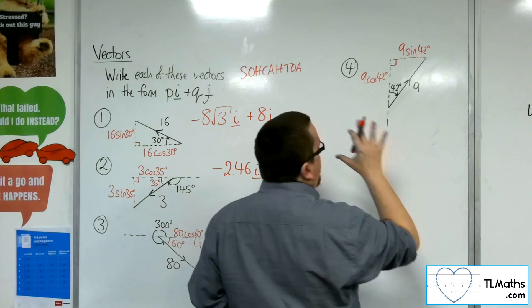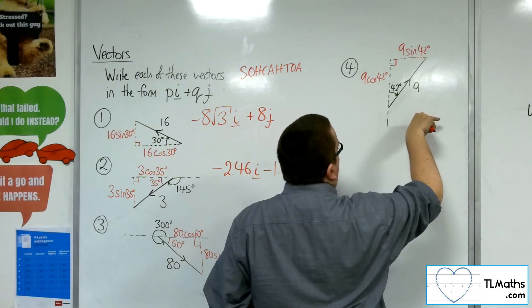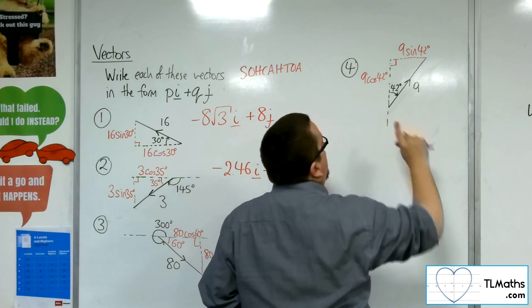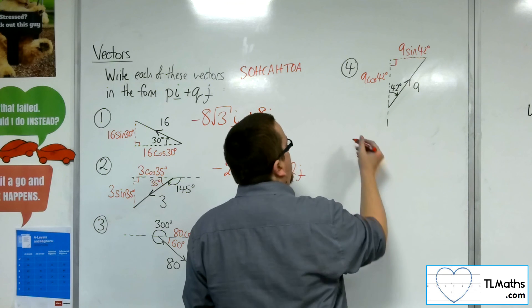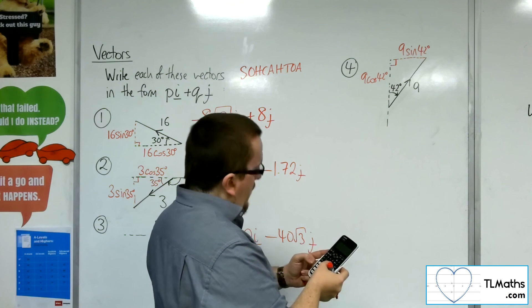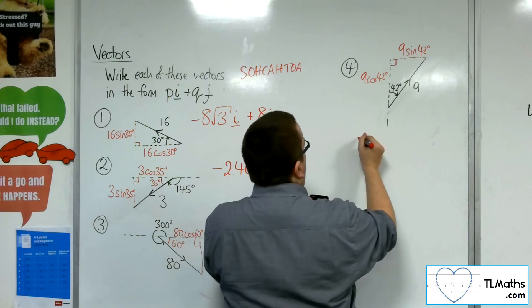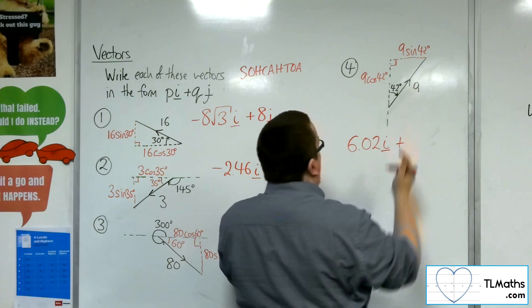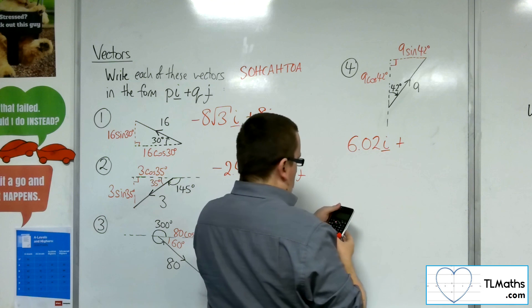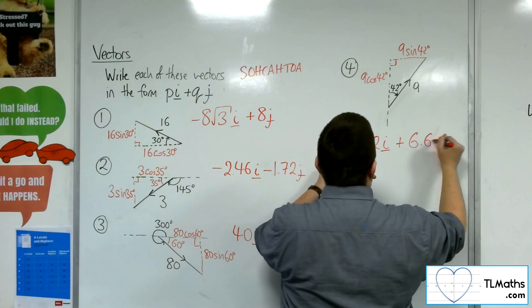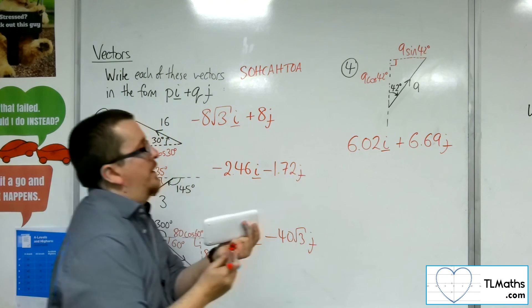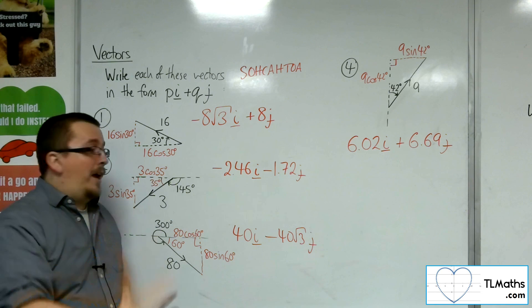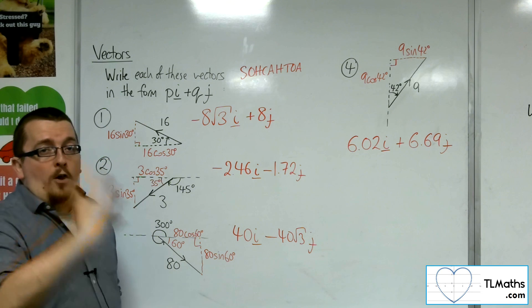So in defining the vector, we're going to be going 9 sine 42 plus 9 cos 42, well, 9 sine 42i plus 9 cos 42j. So 9 times sine 42 is 6.02i, okay, and then plus, because we're going up, 9 times cos 42, so it's 6.69j, both to three significant figures. And that's how we can deal with it. Look at drawing a right-angled triangle. Adjacent uses cosine. Opposite uses sine.